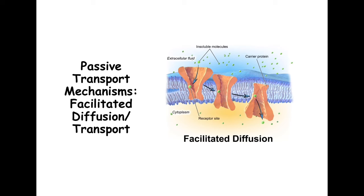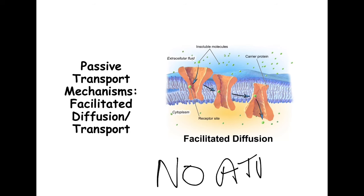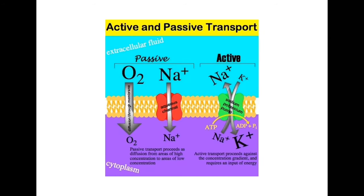Facilitated diffusion still follows a concentration gradient, but the molecules involved may be a bit larger or insoluble, so they need to be carried across. Importantly, facilitated transport does not require ATP, which is why it is still considered a passive transport mechanism.